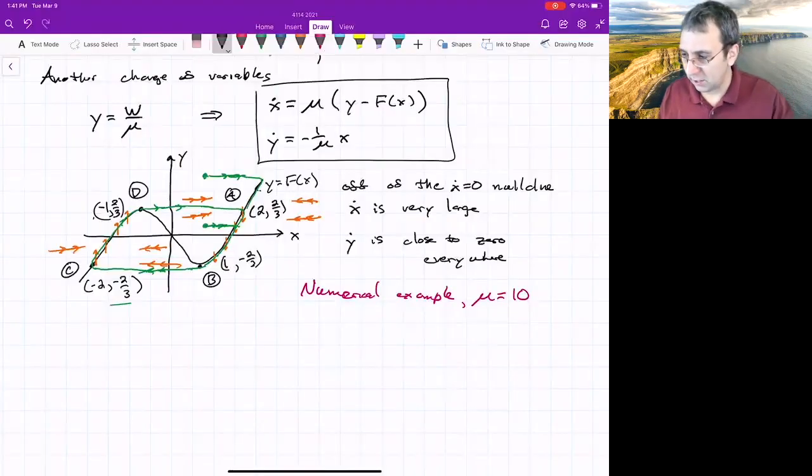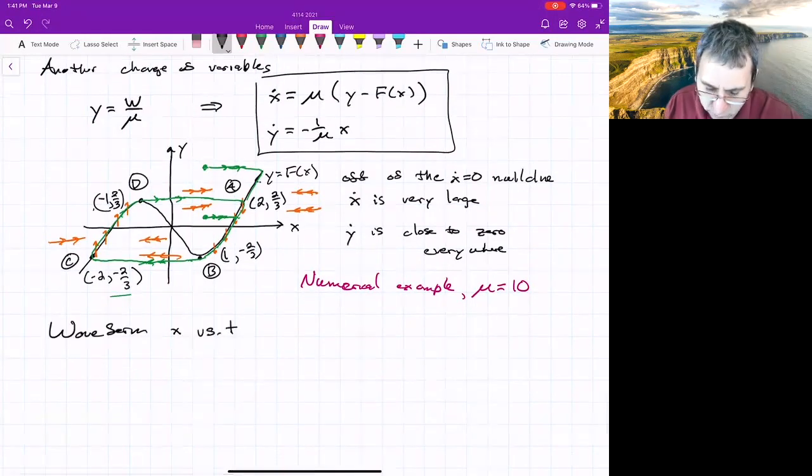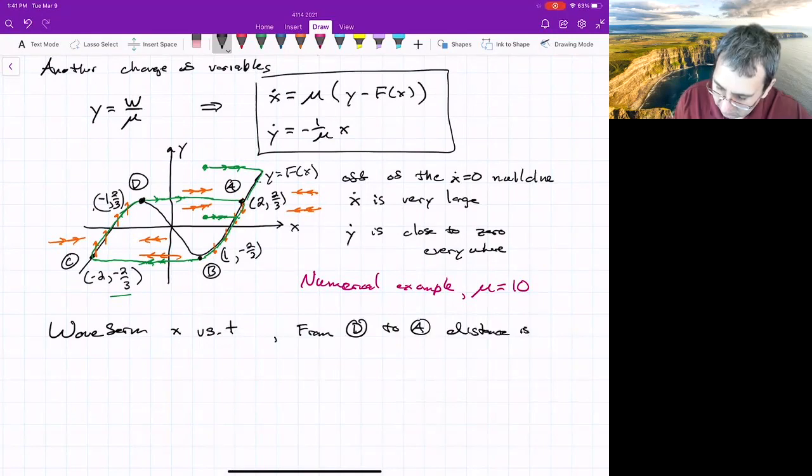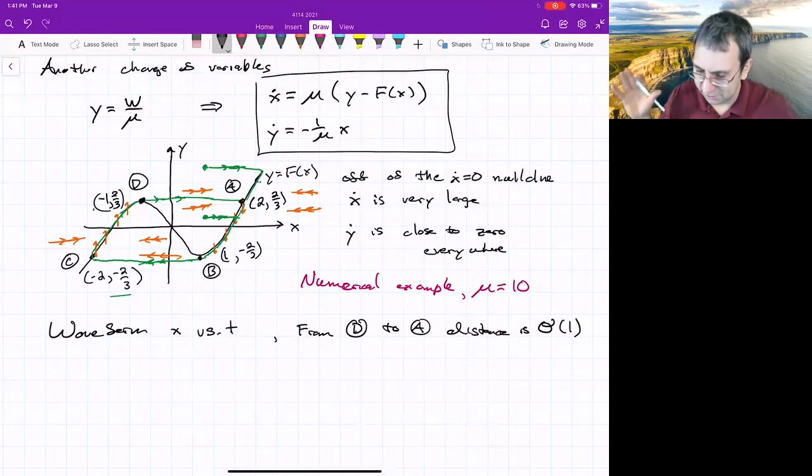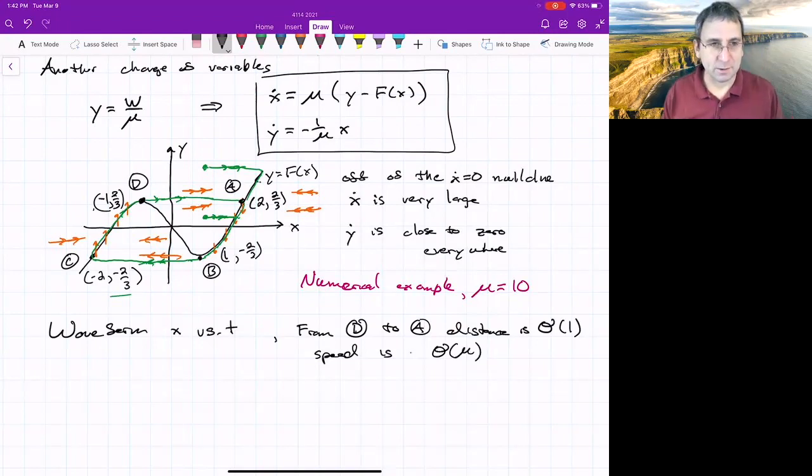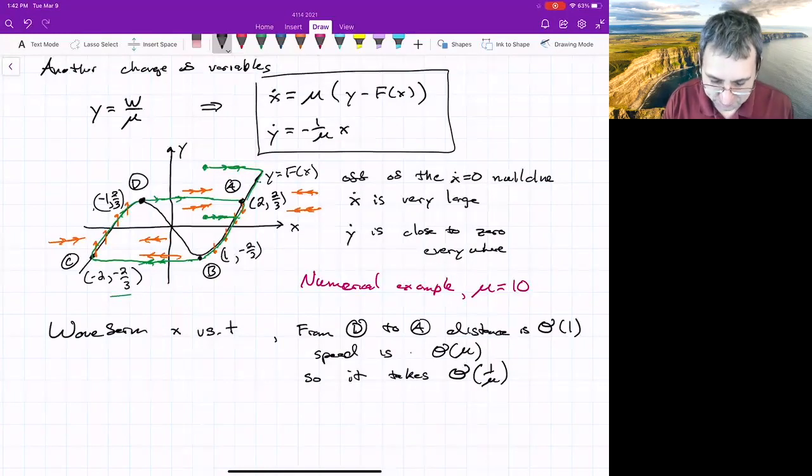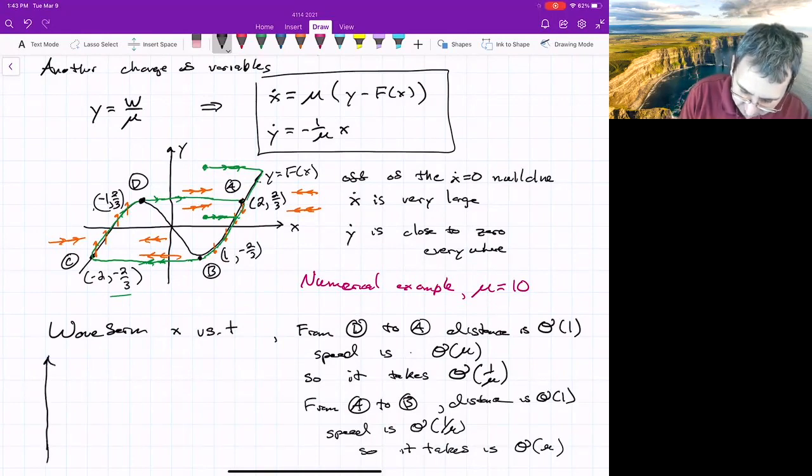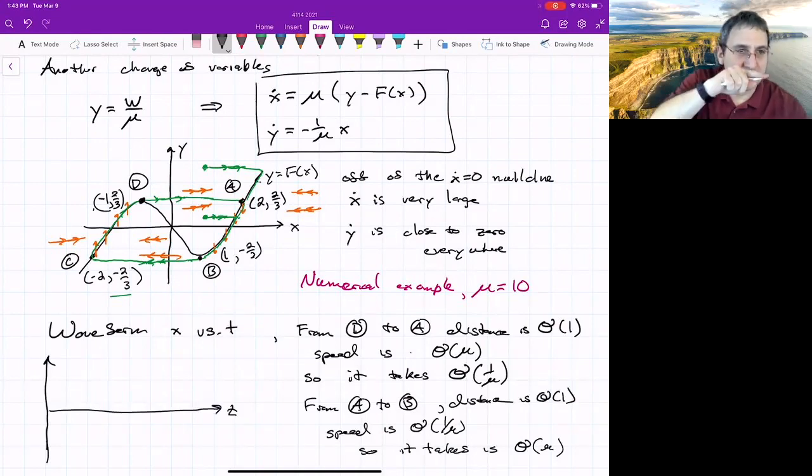If we wanted to know something about the waveform, so how x is changing with time, think of what's going on here. The speed in the x direction going from d to a, that's going a distance of order one. So distance is, I'll just write it this way. It's about three, but it's order one. And our speed is about mu. Speed is order mu. So we'll cross that gap in one over mu. Now going from a to b, that's again a distance of order one. But the speed is about one over mu. So the time it takes is of order mu. So when we put all this together, what will we see? Let's plot x versus time. We'd have the same sort of behavior as we go from b to c and c to d.